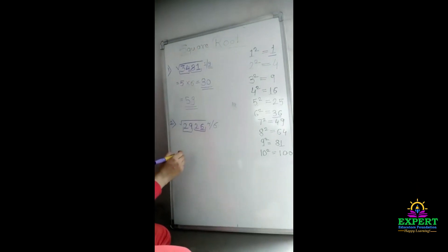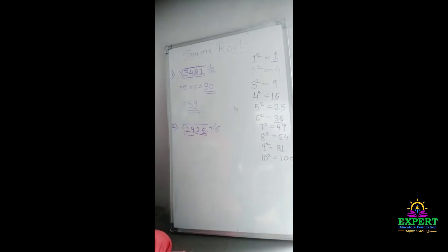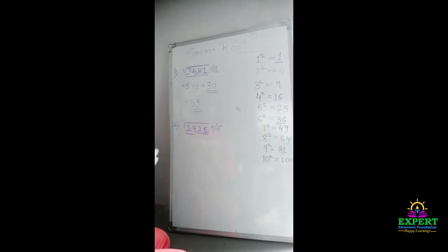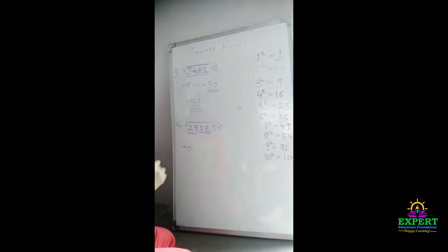Now, we will see the second which is 29. The number which is less than 29 is 25. So, 25 comes at 5.